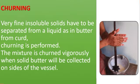Churning: When very fine insoluble solids have to be separated from a liquid, as in butter from curd, churning is performed. The mixture is churned vigorously and solid butter will be collected on the sides of the vessel. Both butter and the buttermilk obtained after churning are useful and can be consumed.